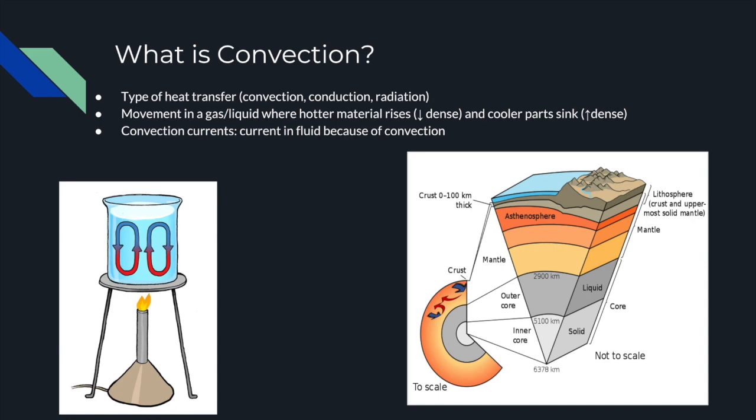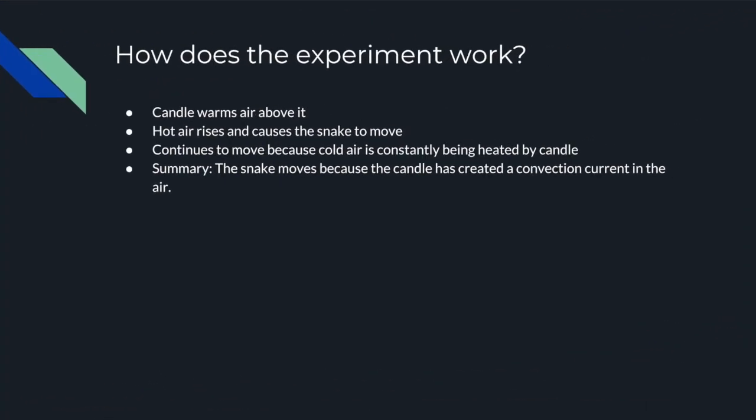So now let's talk about our experiment. How does it work because of a convection current? Well, our candle is the heat source, and it warms the air above it. It becomes less dense, and it rises, and that causes our snake to move.